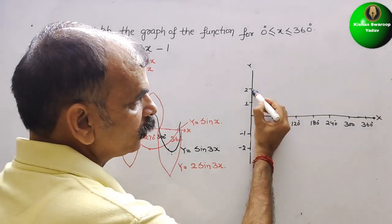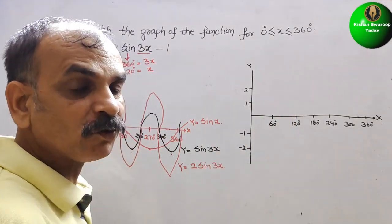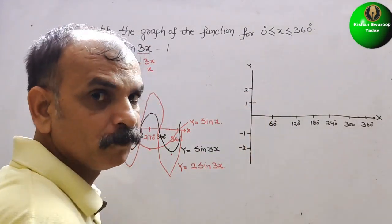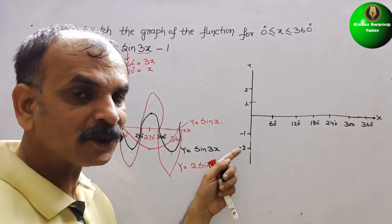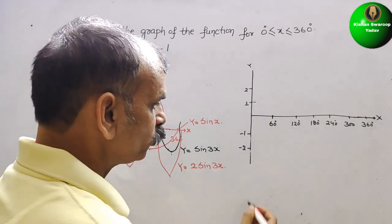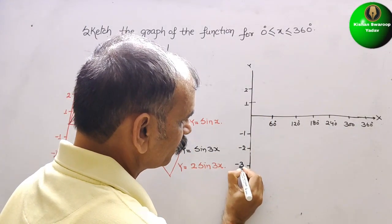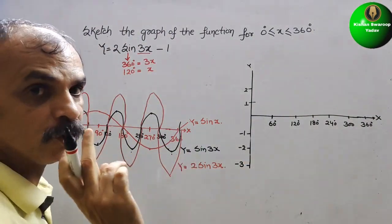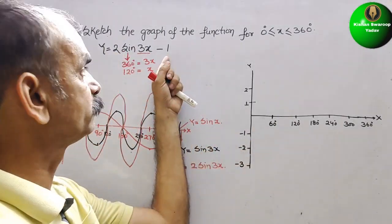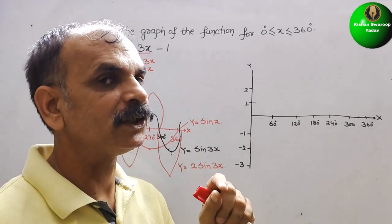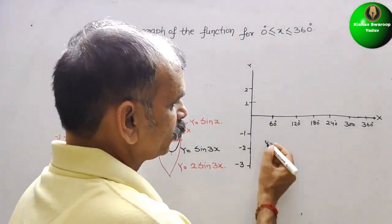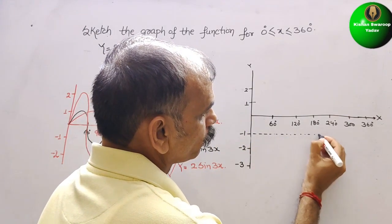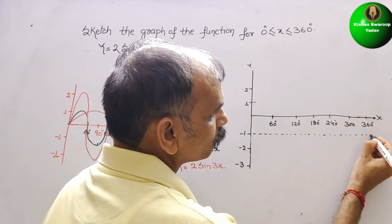The effect of subtracting 1: the maximum of 2 becomes 2 - 1 = 1, and the minimum of -2 becomes -2 - 1 = -3. The baseline level shifts from 0 down to -1. So the wave now oscillates between 1 and -3, centered at the -1 level.